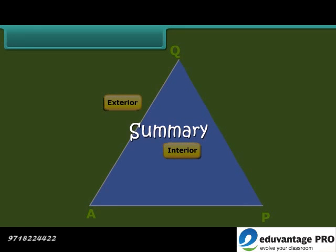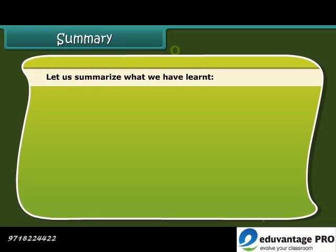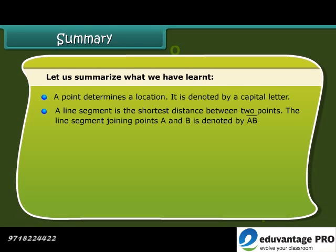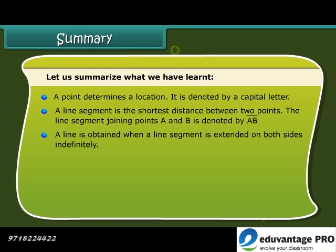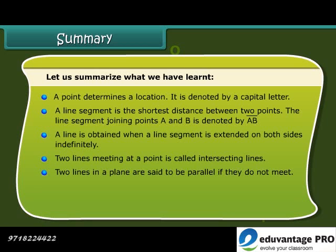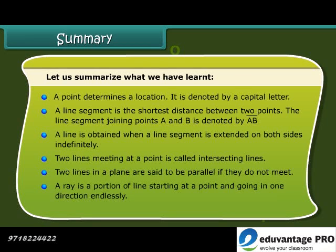Let us summarise what we have learnt. A point determines a location and is denoted by a capital letter. A line segment is the shortest distance between two points, denoted by AB. A line is obtained when a line segment is extended on both sides indefinitely. Two lines meeting at a point are called intersecting lines. Two lines in a plane are said to be parallel if they do not meet. A ray is a portion of a line starting at a point and going in one direction endlessly. Two rays starting from a common point form an angle.